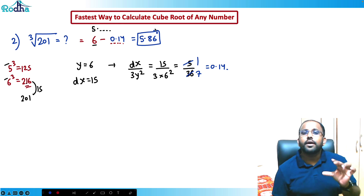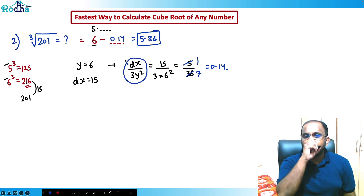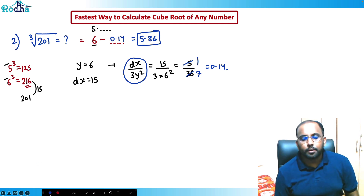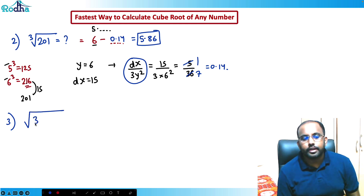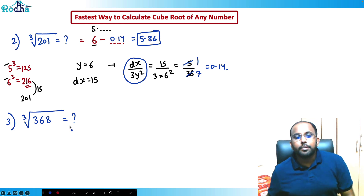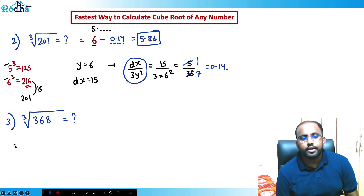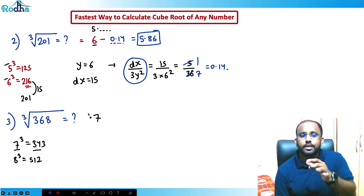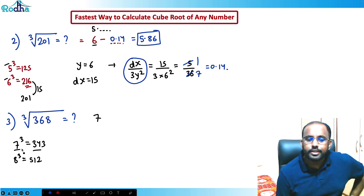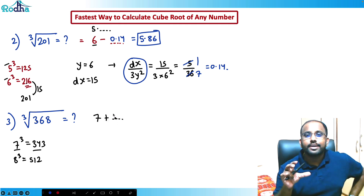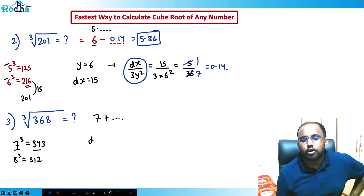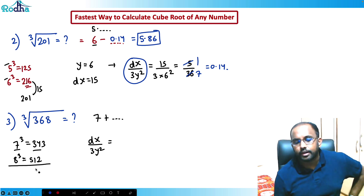Let's take one more example: cube root of 368. I know that 7³ = 343 and 8³ = 512. So the nearest perfect cube is 343, meaning y = 7, and the answer is 7-point-something. You need to add the decimal part to 7. The decimal part is always dx / (3y²).